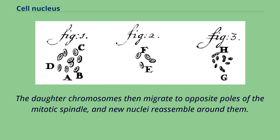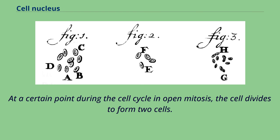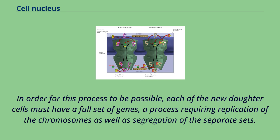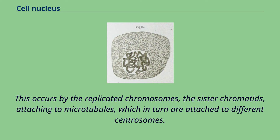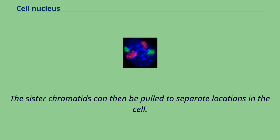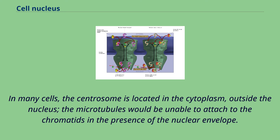At a certain point during the cell cycle in open mitosis, the cell divides to form two cells. In order for this process to be possible, each of the new daughter cells must have a full set of genes, requiring replication of the chromosomes as well as segregation of the separate sets. This occurs by the replicated chromosomes — the sister chromatids — attaching to microtubules, which in turn are attached to different centrosomes. The sister chromatids can then be pulled to separate locations in the cell. In many cells the centrosome is located in the cytoplasm outside the nucleus, so the microtubules would be unable to attach to the chromatids in the presence of the nuclear envelope. Therefore, beginning in prophase and until around prometaphase, the nuclear membrane is dismantled.